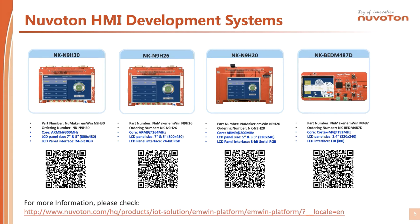It is easy to remember the clock speed of the N9H series from the part number. N9H30 means the clock can go up to 300 MHz, supporting 5-inch and 7-inch panels with a 24-bit RGB interface. N9H26 also supports 5-inch and 7-inch panels with a 24-bit RGB interface, with a clock speed up to 264 MHz. N9H20 means the clock goes up to 200 MHz, supporting 3.5-inch and 5-inch panels with an 8-bit RGB interface.